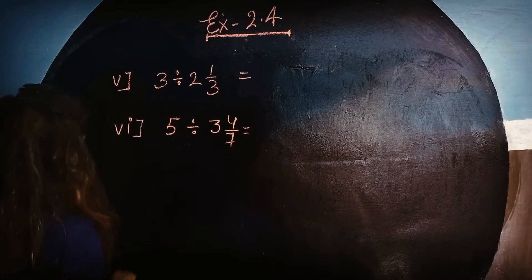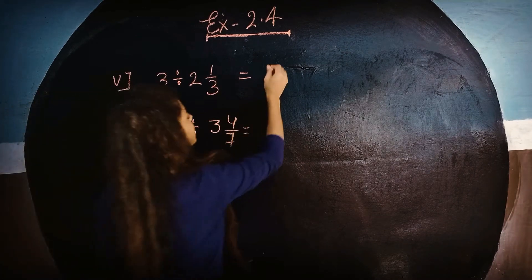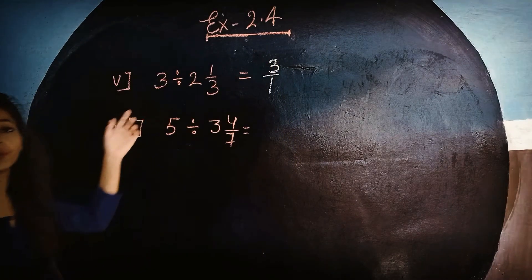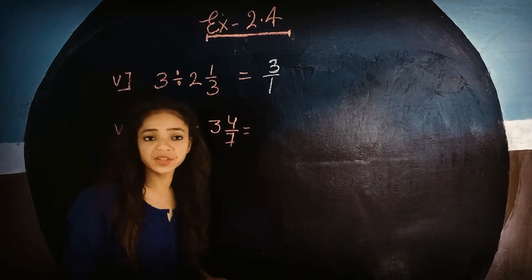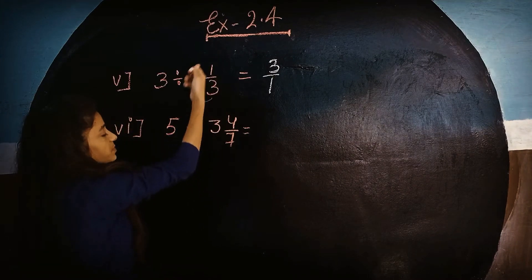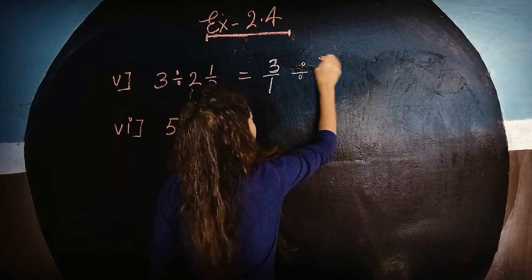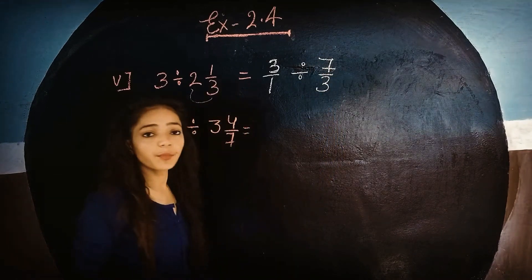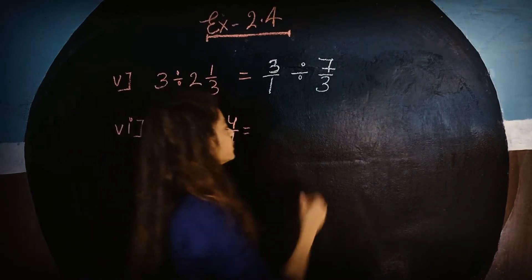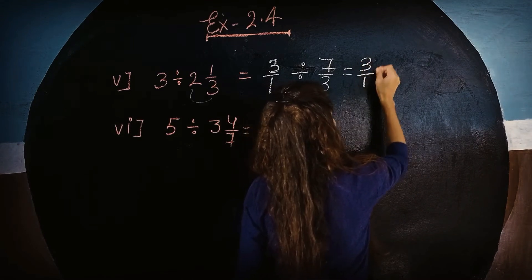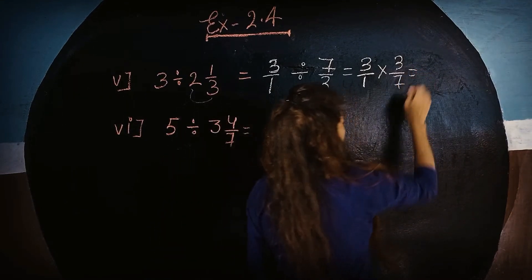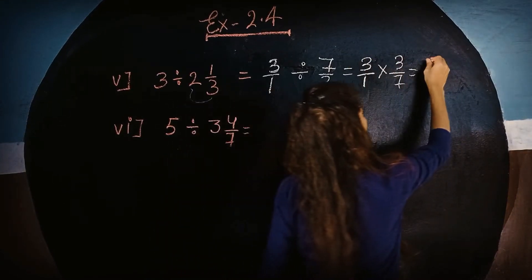Let's come to fifth and sixth parts. Fifth part — we have a mixed fraction, so first we change it to a simple fraction. 3 upon 1, because numerator and denominator are given. With 3 whole 1 upon 3: 3×3=9, plus 1, gives 7 upon 3. Now we do the reciprocal of the second part, so multiply by 3 upon 7. After reducing, we get 9 upon 7.